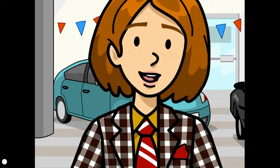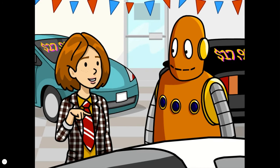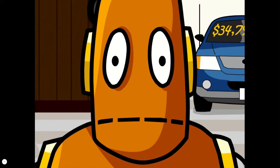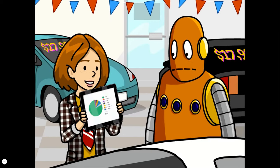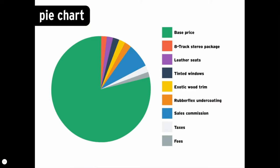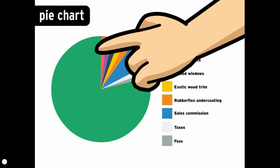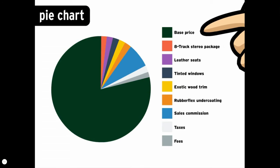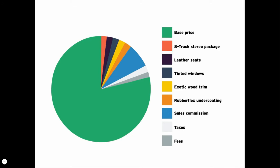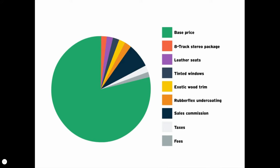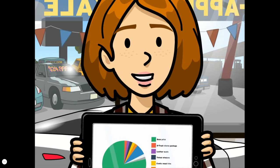All right, let's talk money. Our sale price for this model is $49,999. Trust me, you're getting a lot of bang for your buck. Let's break it down using a pie chart, a circular graph that shows the parts of a whole. The total price of the car is the whole pie. That includes the base price of $42,000, plus extras: 8-track stereo package, leather seats, tinted windows, exotic wood trim, rubber flex undercoating, commission, and taxes and fees. All of that for under $50,000 is a steal!